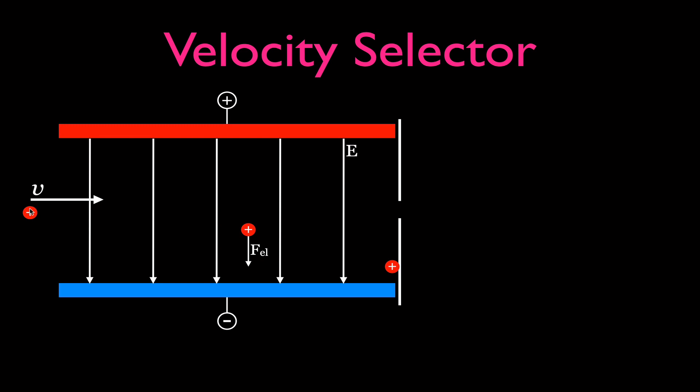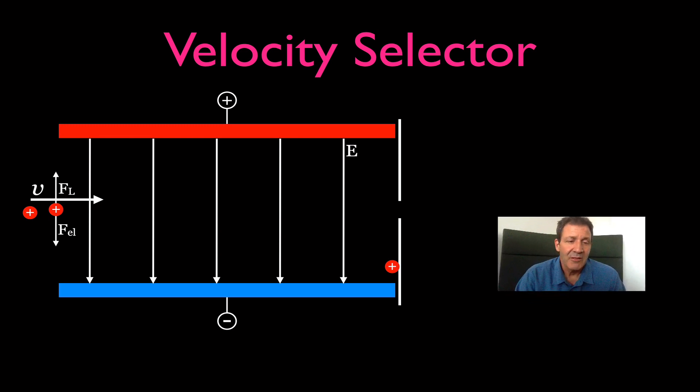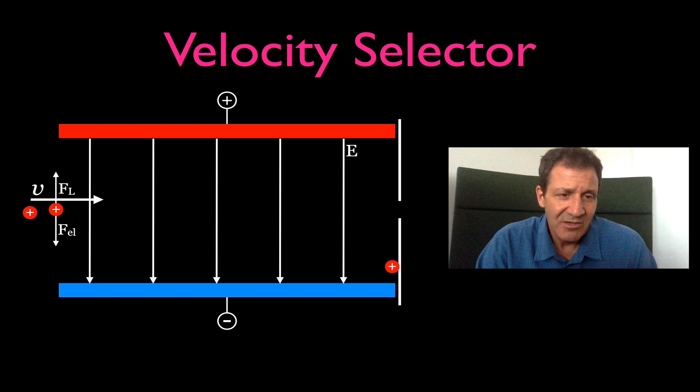We want some particles — with just the right velocity — to travel straight through and make it to the slit. To prevent them from deflecting downward, we need to add something that gives them a force in the upward direction. That force is going to be the Lorentz force, because we are going to add a magnetic field so that the electric force will be equal to the Lorentz force and those particles will travel straight through. We need to determine the correct orientation of the magnetic field so that the Lorentz force points in the upward direction.